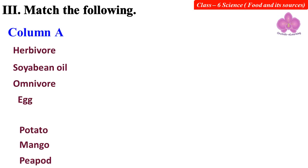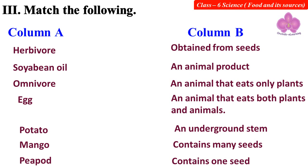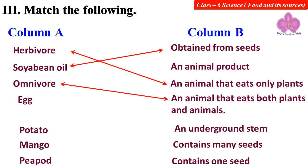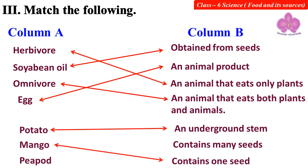Match the following. Column A to Column B: Herbivore — an animal that eats only plants. Soybean oil — obtained from seeds. Omnivore — an animal that eats both plants and animals. Egg — an animal product. Potato — an underground stem. Mango — contains one seed. Pea pod — contains many seeds.